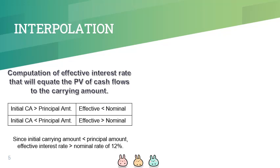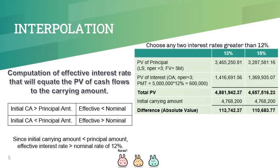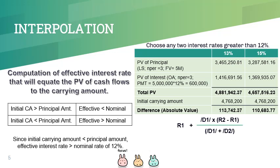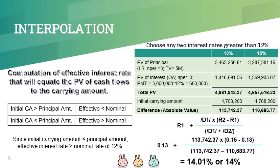Using interpolation, the effective interest rate is computed as follows. First, we choose any two discount rates greater than 12%, say 13% and 15%. It is important that we choose discount rates that are not too far apart. Second, we compute the present value of cash flows under each discount rate. Take note that we use the lump sum PV factor for the principal and ordinary annuity PV factor for the interest received, where interest received is the principal amount times the nominal rate. Third, we get the absolute difference between the present value and the initial carrying amount. Then finally, we use the following formula. The formula should give us the effective interest rate of 14.01%, or approximately 14%.